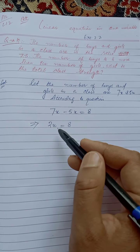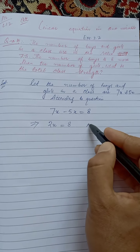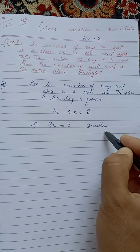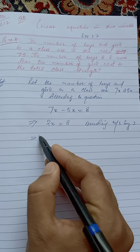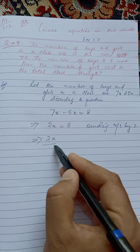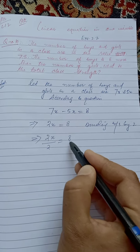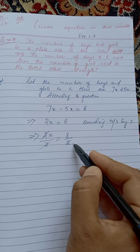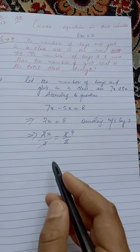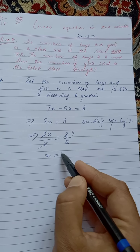To solve for x, dividing both sides by 2. 2x divided by 2 is equal to 8 divided by 2. 2 cancels out, giving us x is equal to 4.